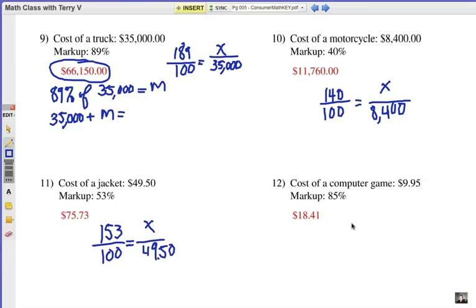Number 12, to set up the proportion, 185% over 100 is equal to something over 9.95. These are all round to the nearest penny, so hopefully your results are about the same.